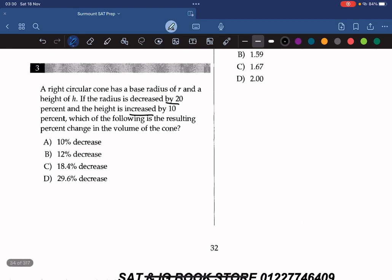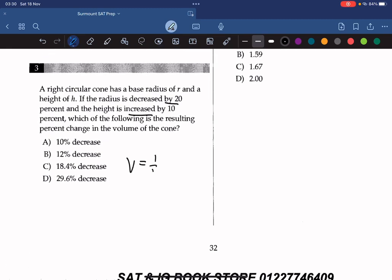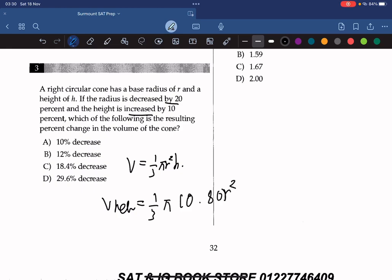So what is the volume of the cone? The volume of a cone is 1 over 3 pi R squared H. Let's model this equation neatly with the given information. So V new equals 1 over 3 pi. Since the radius is decreased by 20%, it must be 0.8R squared, multiplied by 1.1H. And this will give us, if we use the calculator, 0.704 V0.